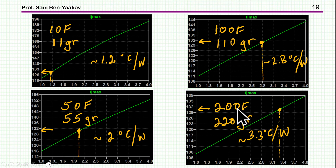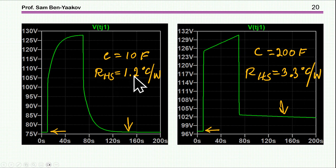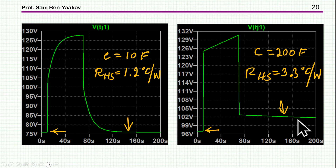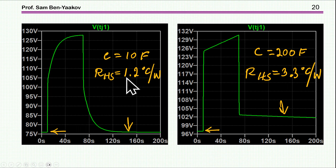The larger the weight, the larger the thermal resistance can be; with smaller weight, you need quite a low thermal resistance. Comparing the two cases — 10 farad and 200 farad — due to the lower thermal mass, the recovery of the junction temperature is much faster with a lighter heatsink. With a heavy heatsink having a larger thermal resistance, recovery is very slow, so if another pulse comes in the average temperature will start rising. With the lighter heatsink you are ready for the next pulse sooner, so the time between pulses can be shorter.